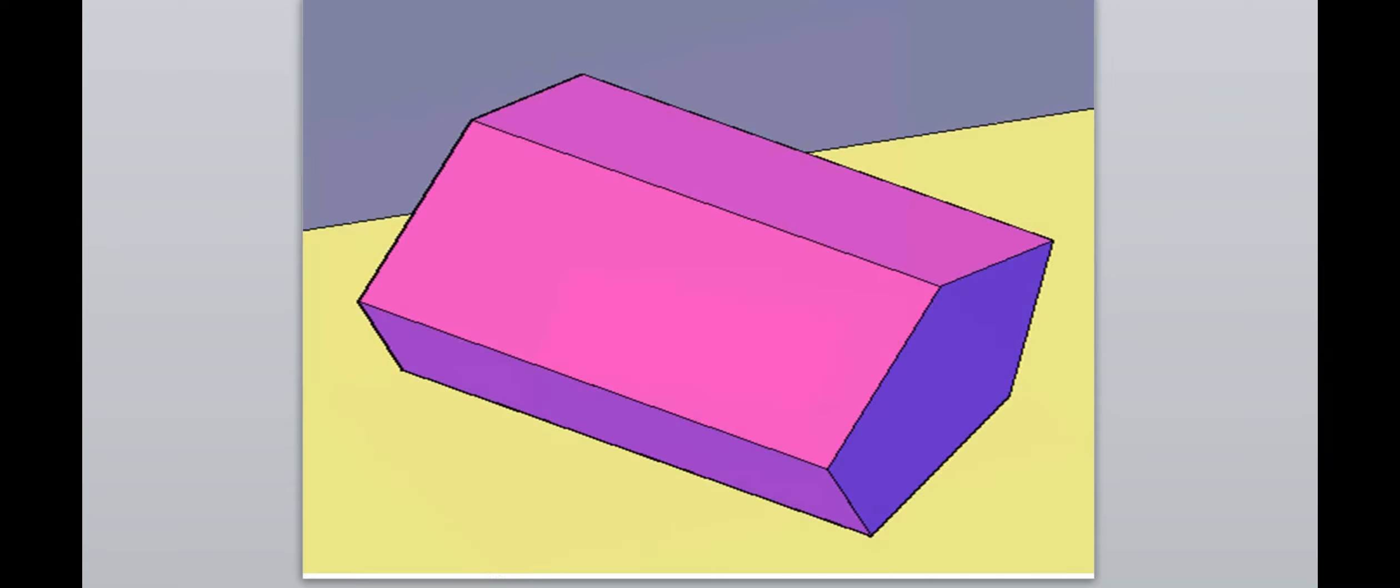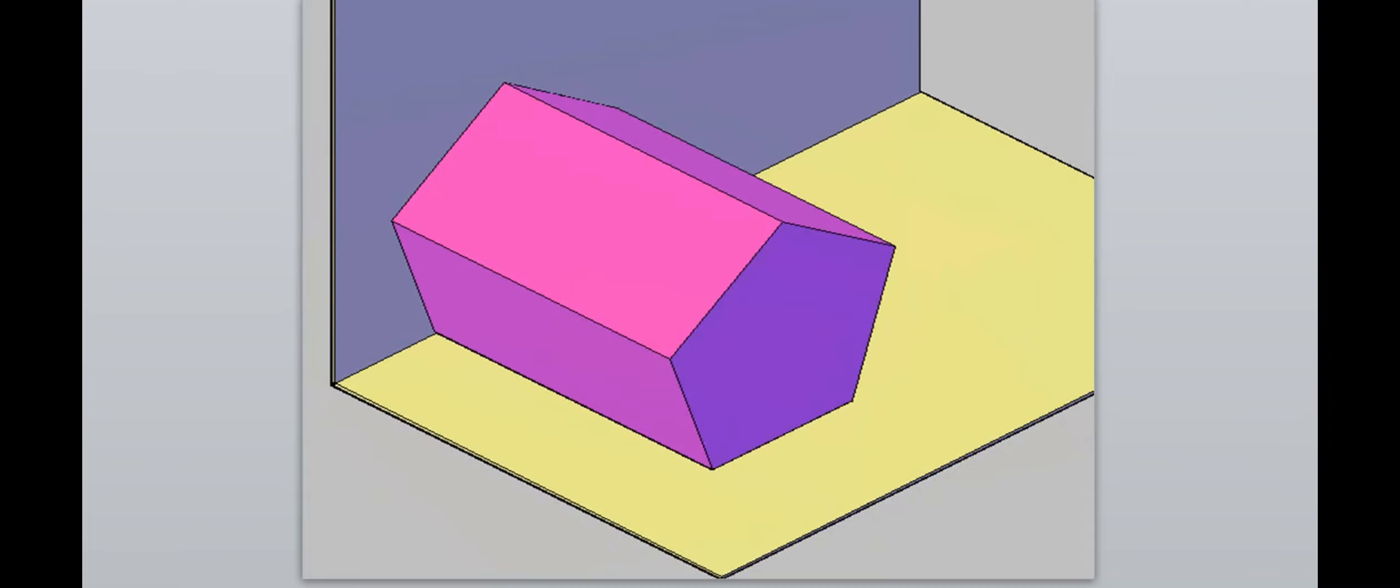Initially, we will assume that the axis is perpendicular to VP. So the base of the prism will be seen in the elevation. Prism is lying on the ground with its rectangular face. So one of the base edges, which is a part of this rectangular face, should be on the ground or HP.